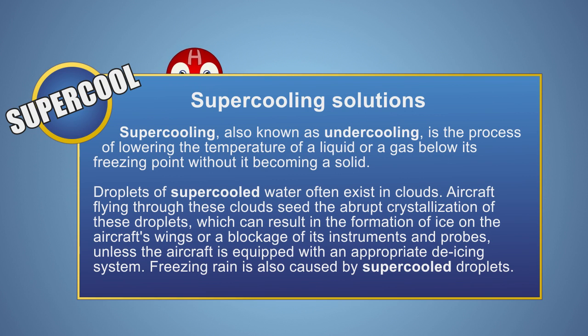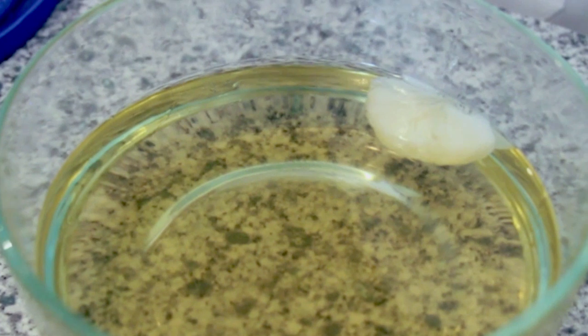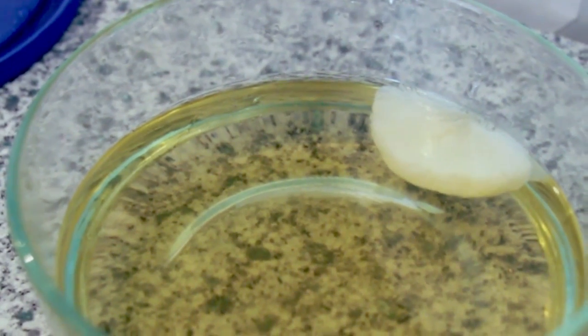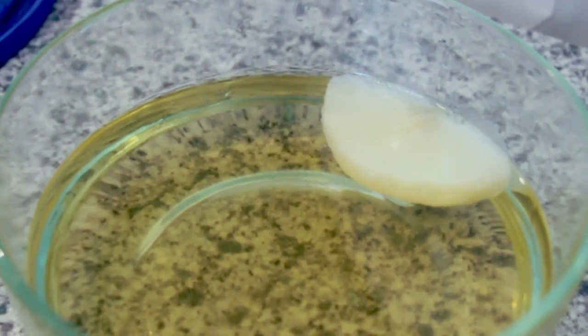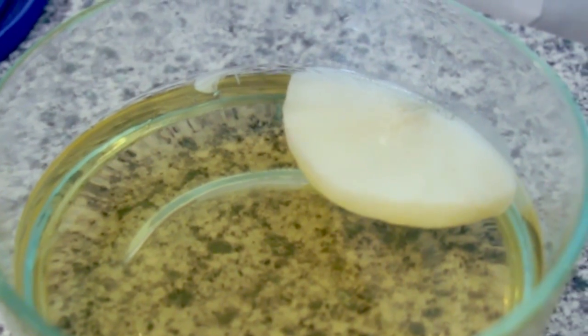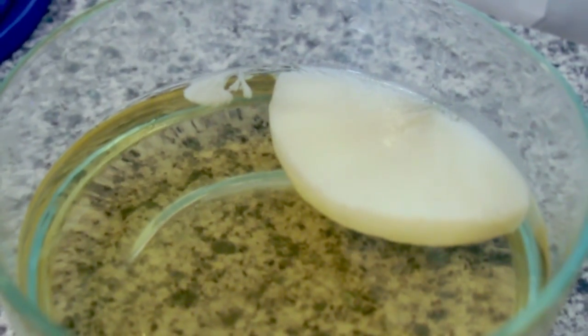When a liquid is supercooled, it really wants to become a solid. Our solution wants to become a solid so badly that any type of disturbance, even a grain of dust, will cause our reaction to start and our liquid will turn into a solid.